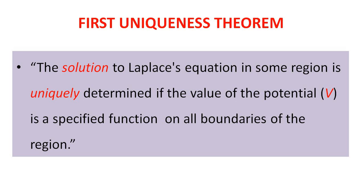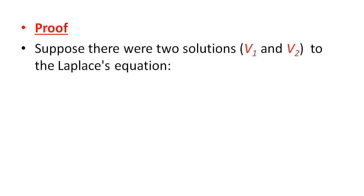According to this, the solution of the Laplace equation — del squared V equal to 0 — is unique. Proof: suppose there were two solutions, V1 and V2, to the Laplace equation. This is a false argument — the solution we assume.